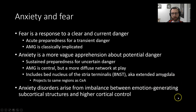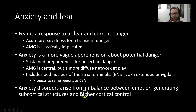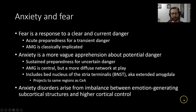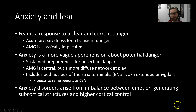Anxiety disorders often arise from an imbalance between emotion-generating subcortical structures like the amygdala and BNST, and higher-order cortical top-down control. If our frontal cortex is working to regulate emotion, it needs to be in balance with the emotion-generating subcortical structures. An imbalance between those two factors can lead to emotion dysregulation and things like phobias and PTSD, but we'll talk in much more detail about the pharmacology of that coming up.